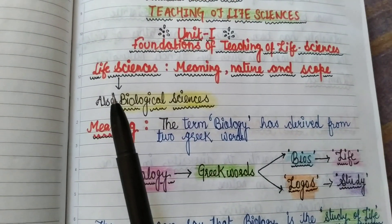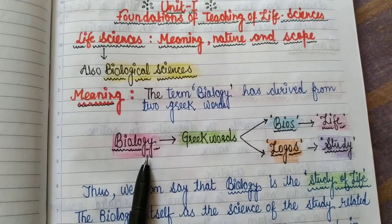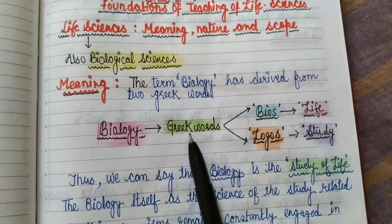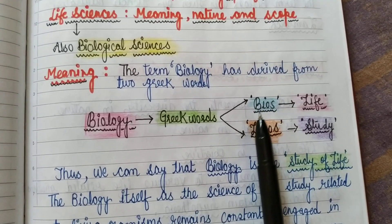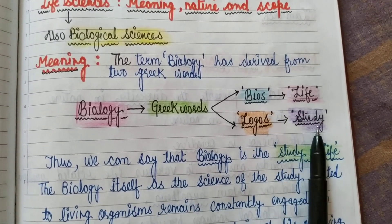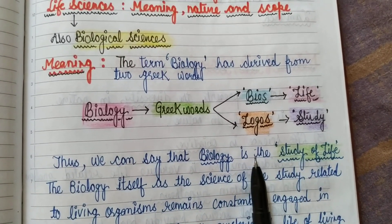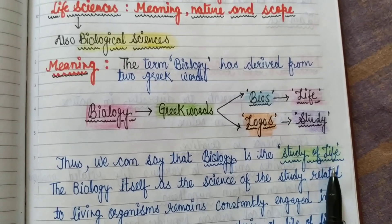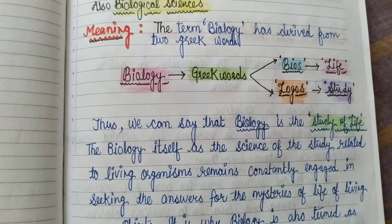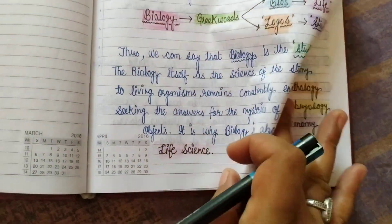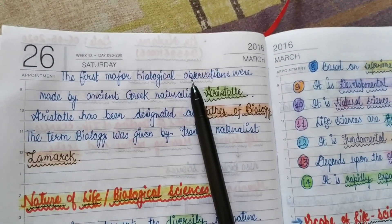As we know from our earlier education, biology has been derived from two Greek words: 'bios' and 'logos,' where bios means life and logos means study. So we can say that biology is the study of life — all life-related processes come under biology.